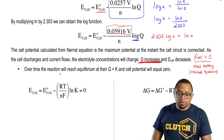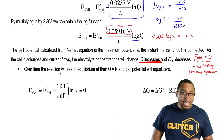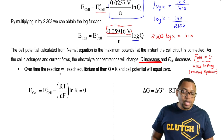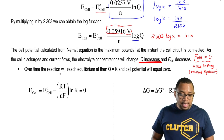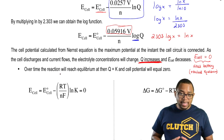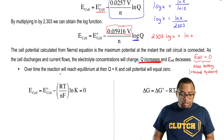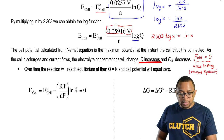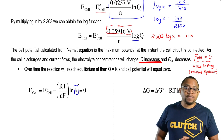The cell potential decreases until it reaches zero — that's when we have a dead battery, because the battery has reached equilibrium. Over time, the reaction reaches equilibrium and Q, our reaction quotient, equals K, our equilibrium constant. The cell potential equals zero, giving us a dead battery. Once we've reached equilibrium, we can substitute K instead of Q.